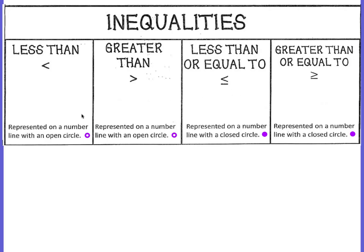When you're graphing them on a number line, if you're graphing the less than — if you're saying x is less than some number — you're going to represent it on the number line with an open circle. And then because it's less than, think of an actual number line: the numbers that go to the left are smaller. Our line will go to the left.